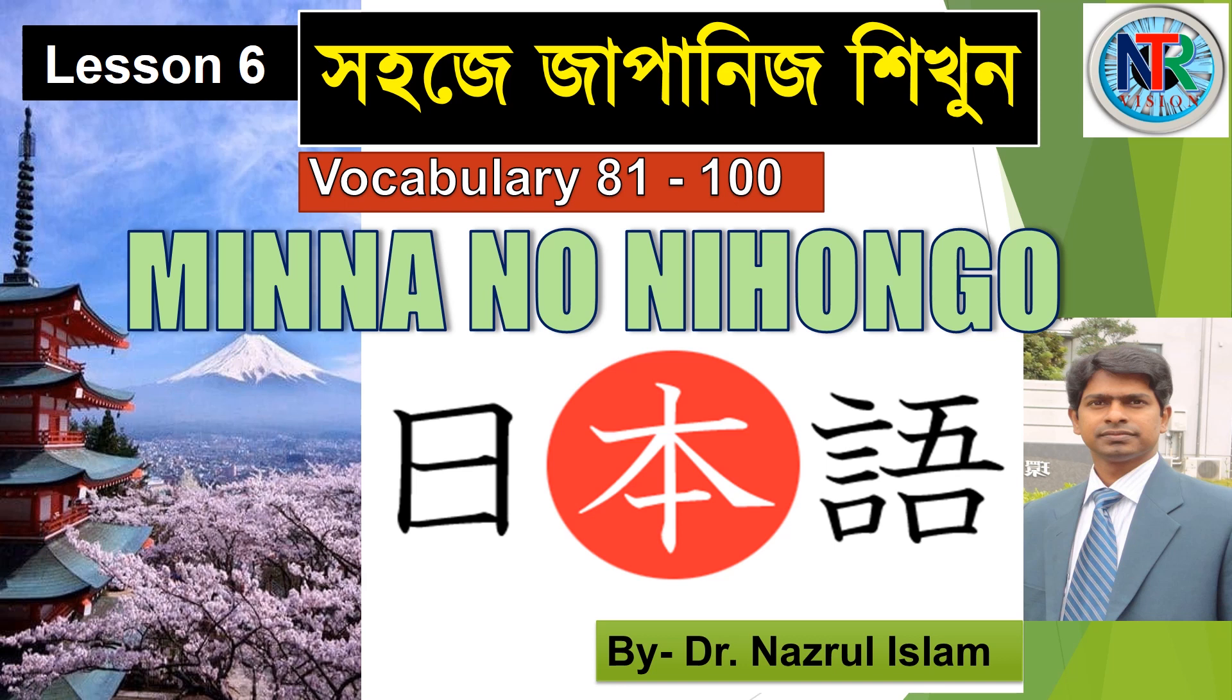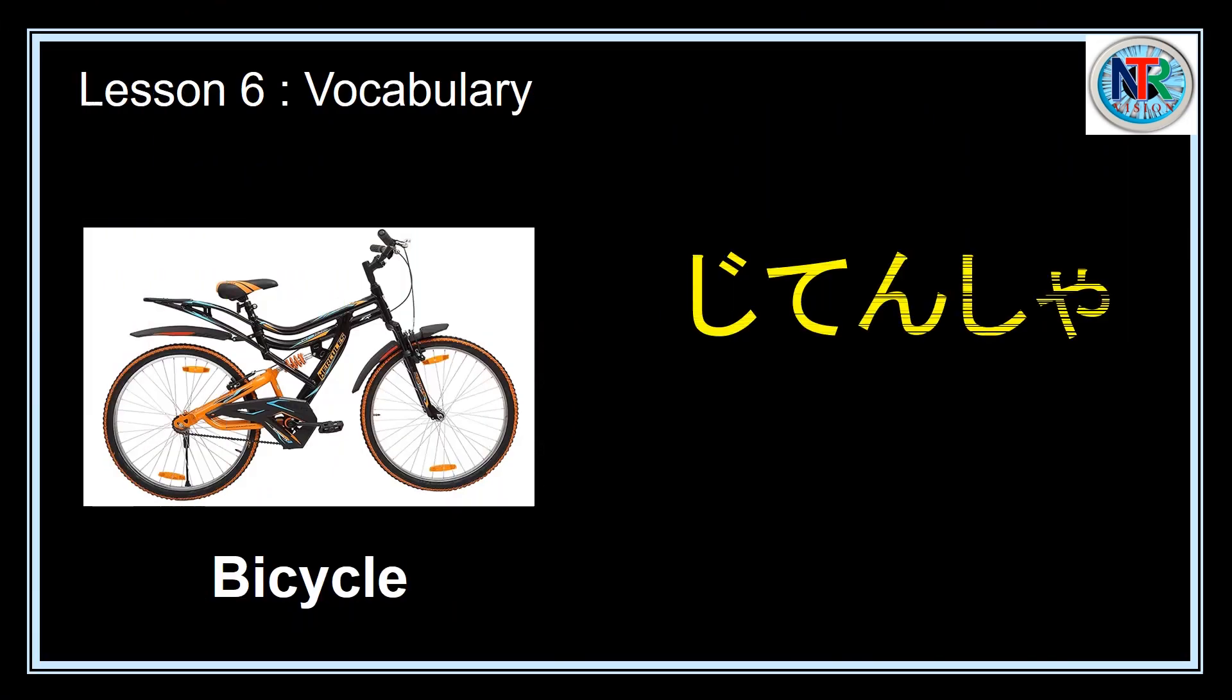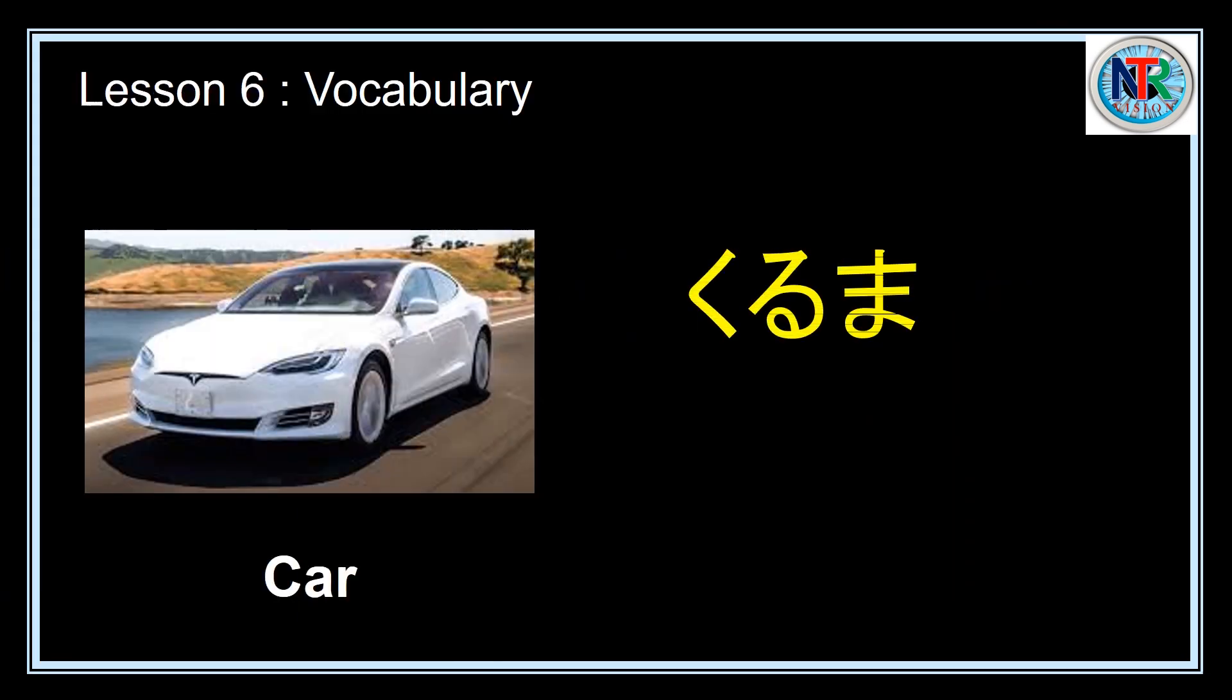Firstly, we will know some vehicles' names in Japanese. Jitensha means bicycle. Kuruma means car.